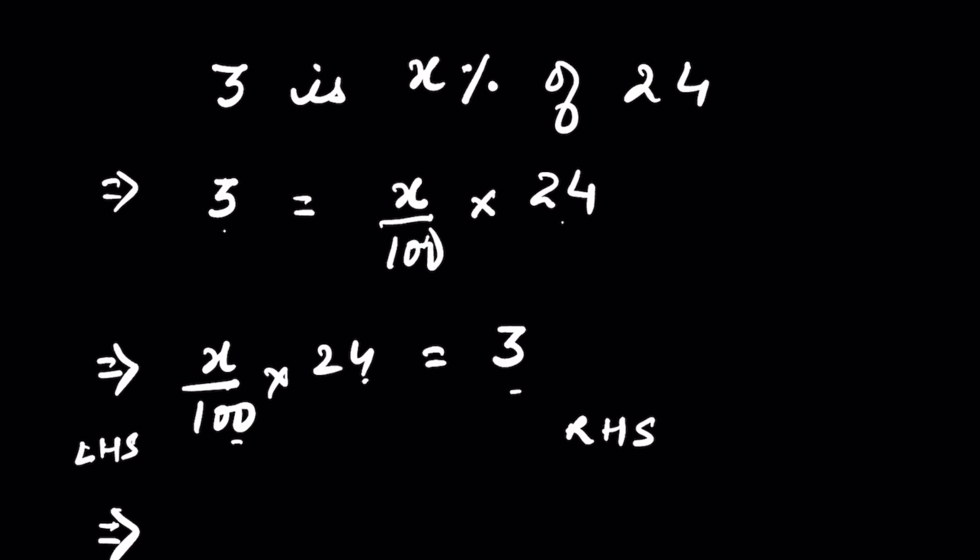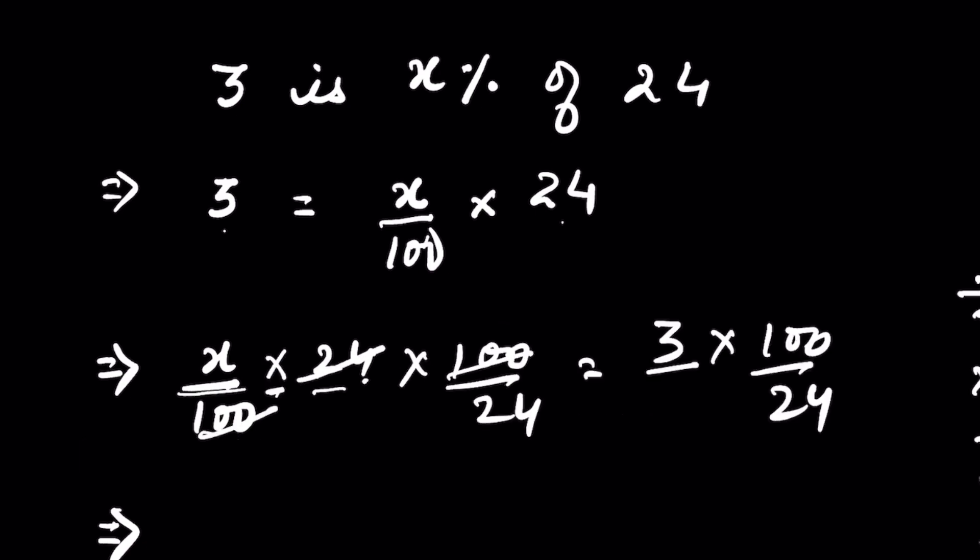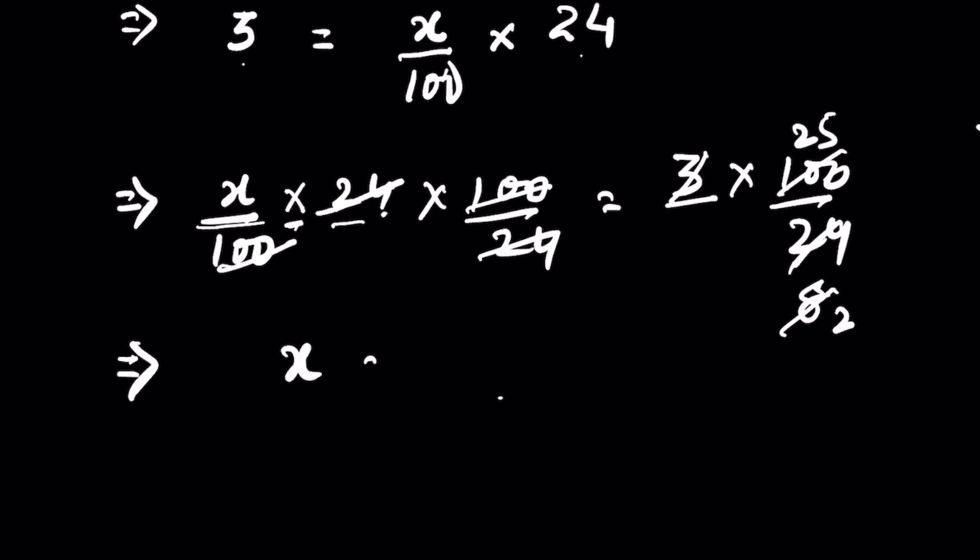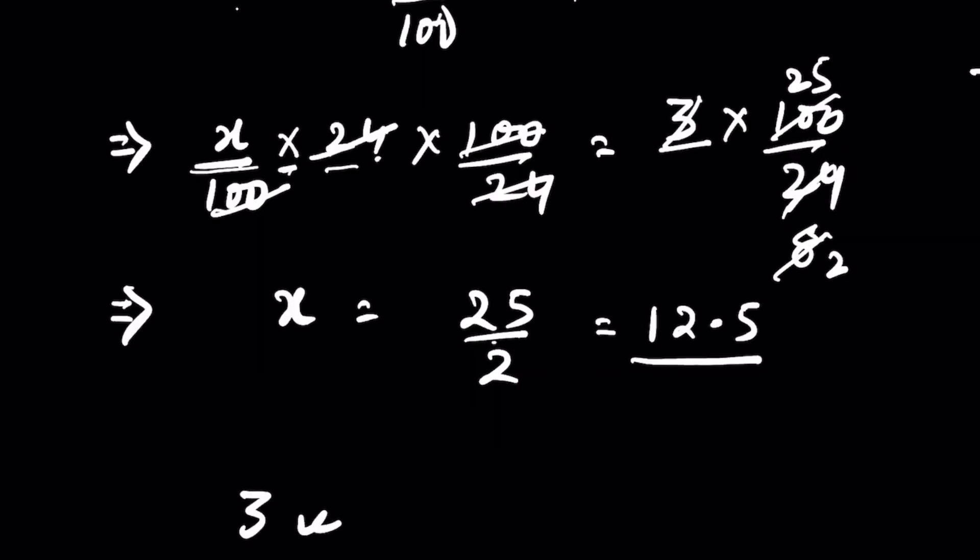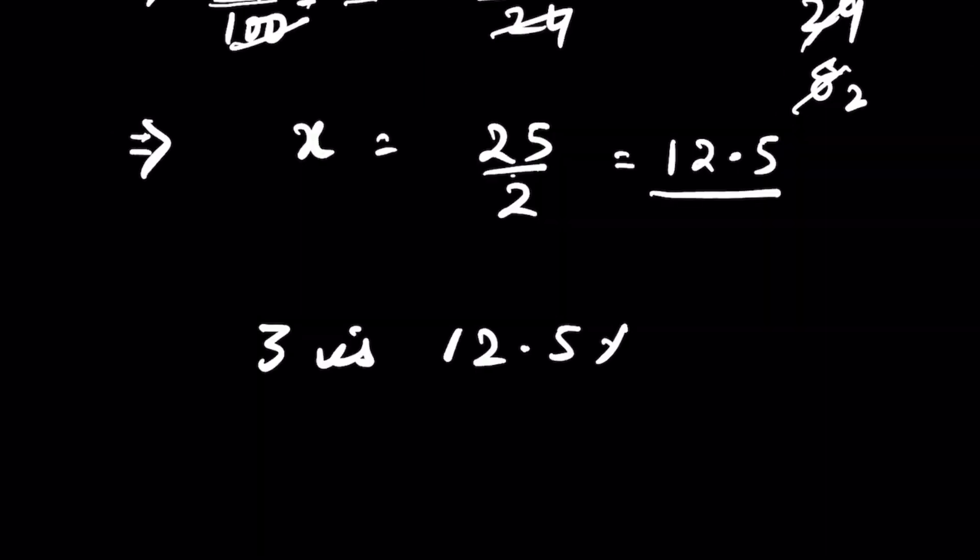You cut it down. 3 times 8 is 24, 4 times 2 is 8, and 4 times 25 is 100. Now x equals 25 over 2, or 12.5. 3 is 12.5 percent of 24.